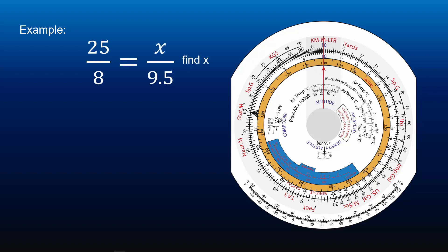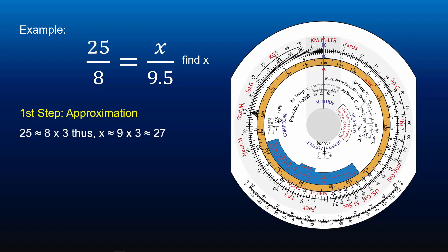25 over 8 equals X over 9.5 — find X. The first step for any operation using CRP5 is to make a rough estimate of the answer in order to establish where the decimal point will be. 25 is approximately 8 times 3, thus X is approximately 9 times 3, which is 27.